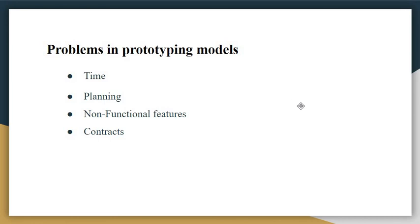The next problem is non-functional features. Often the most important features of a system will be non-functional ones, such as safety and reliability, and these are precisely the kind of features which are sacrificed in developing a prototype. The next problem is contracts — the design process is often governed by contractual agreements between customer and designer, which are affected by many of these managerial and technical issues. All these are the problems that we face in prototyping models.